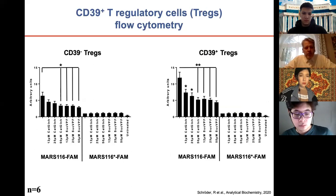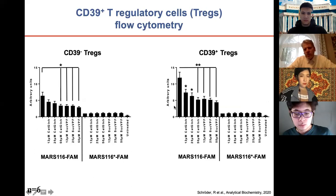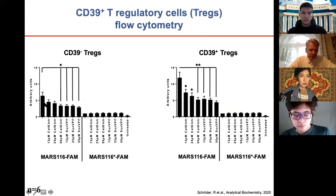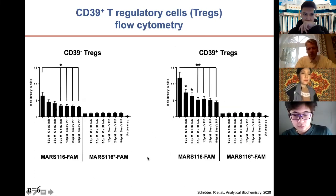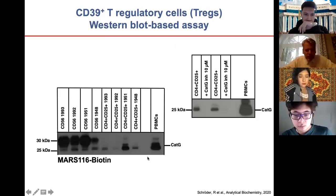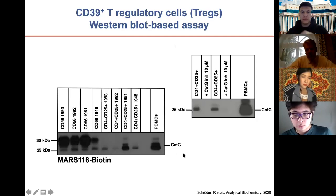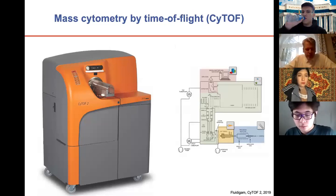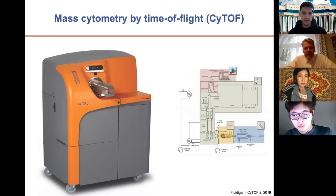We also show new data on T regulatory cells: a distinct subset called CD39-positive T-regs has more cathepsin G than CD39-negative T-regs. CD39-positive cells have greater regulatory capacity. Using the active site label, we confirm that CD4+CD25+ T regulatory cells are positive for cathepsin G. This data was recently published in 2020.